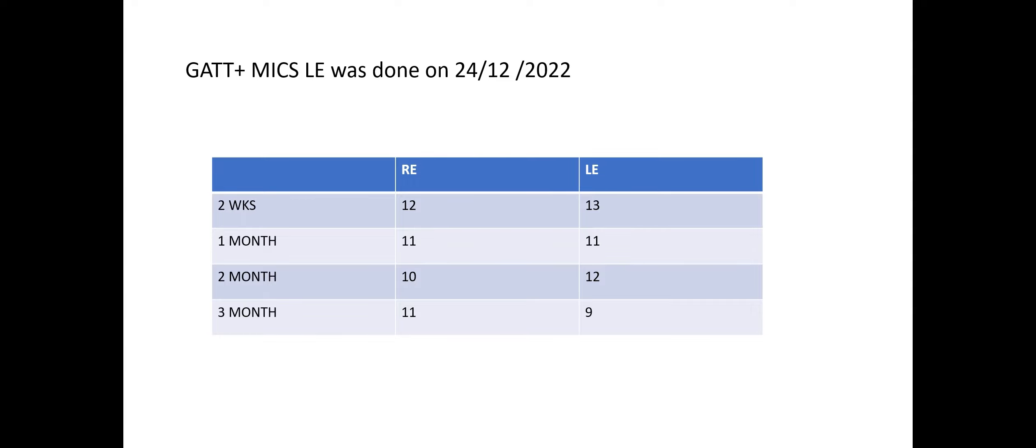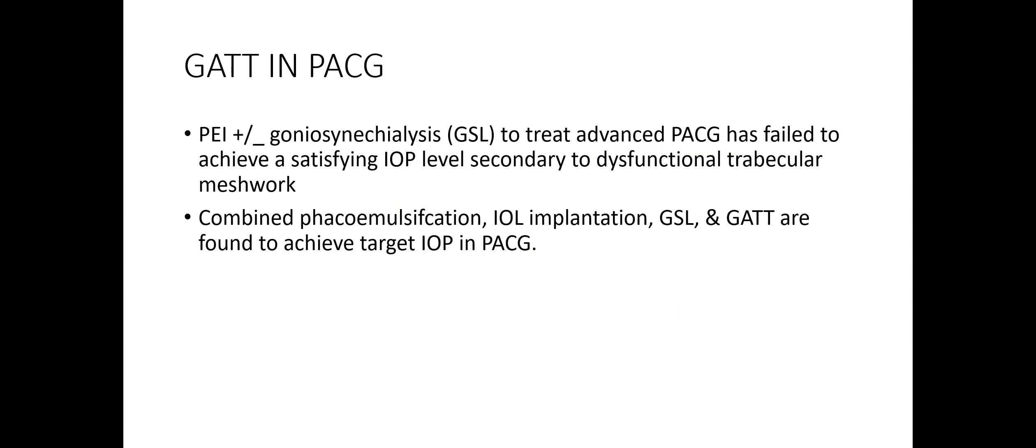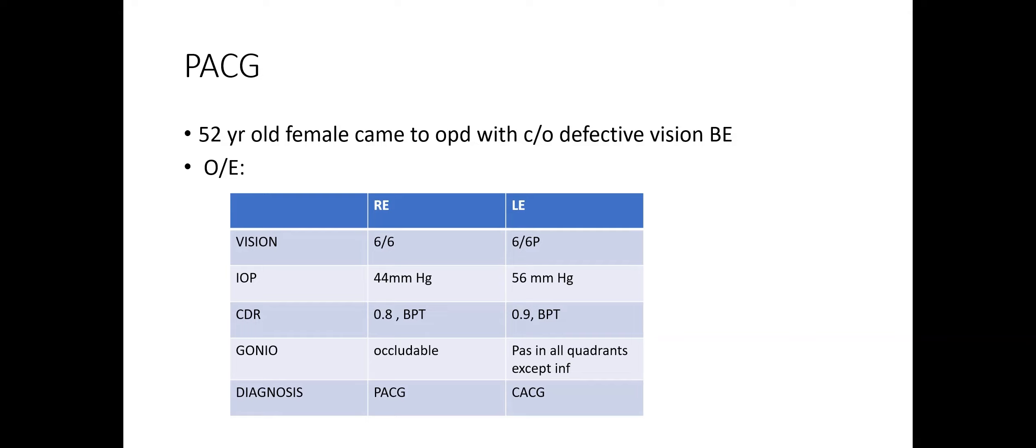The patient had good control of intraocular pressure in both eyes. In angle-closure glaucoma, phacoemulsification with goniosynechiolysis has failed to achieve a satisfying intraocular pressure level because of dysfunctional trabecular meshwork. In such cases, combined phacoemulsification along with goniosynechiolysis and GATT are found to achieve target IOPs.